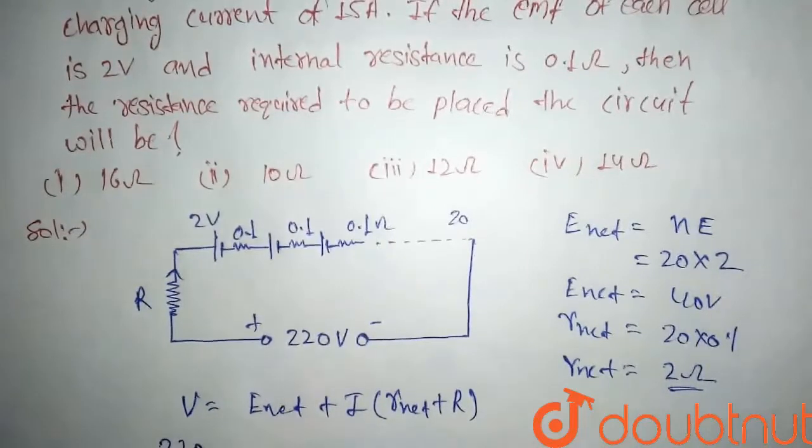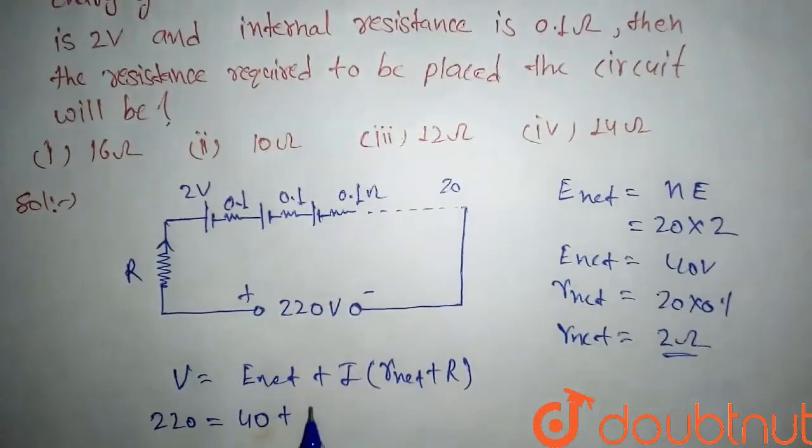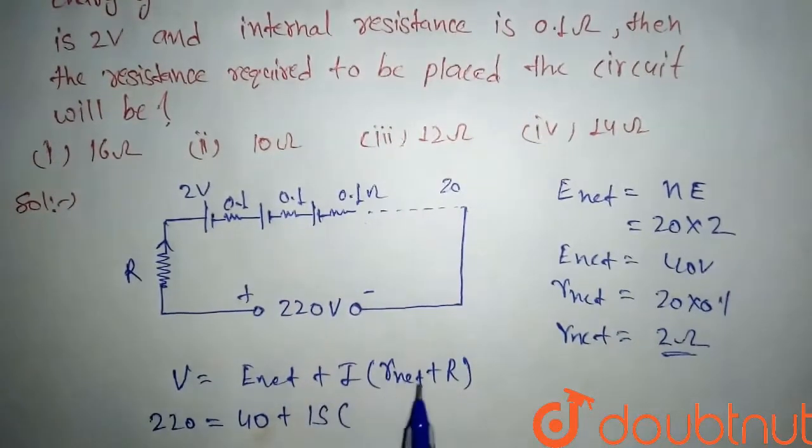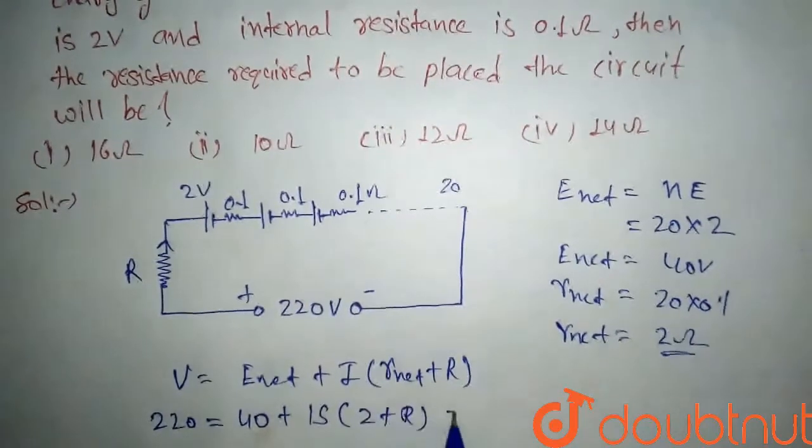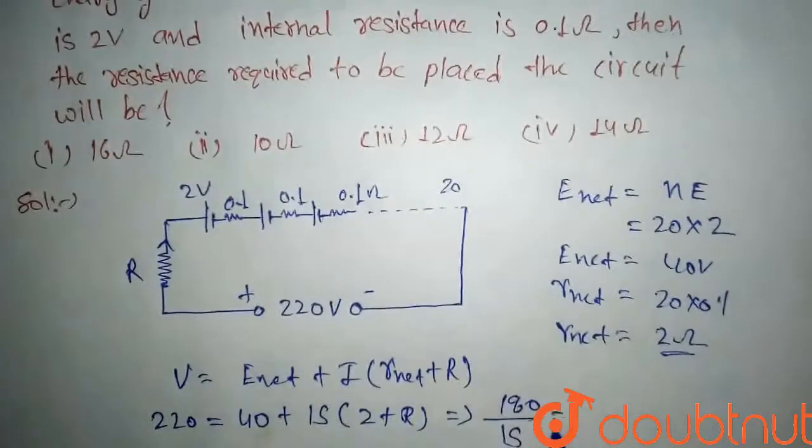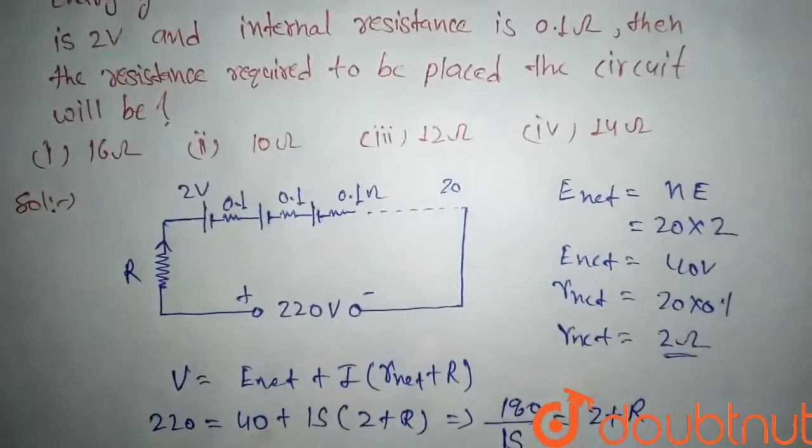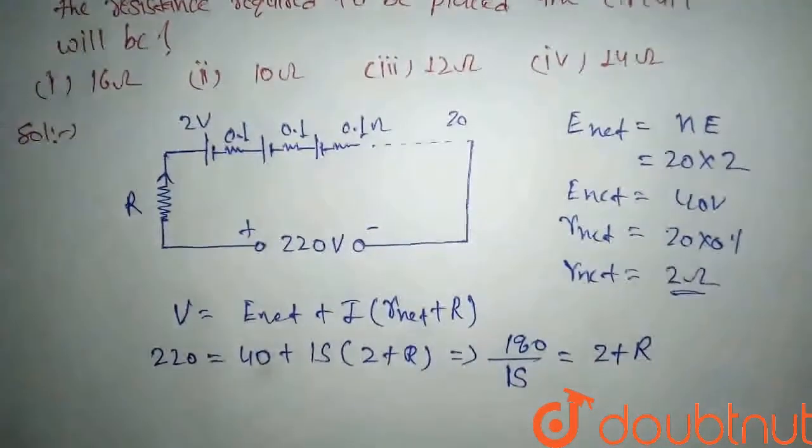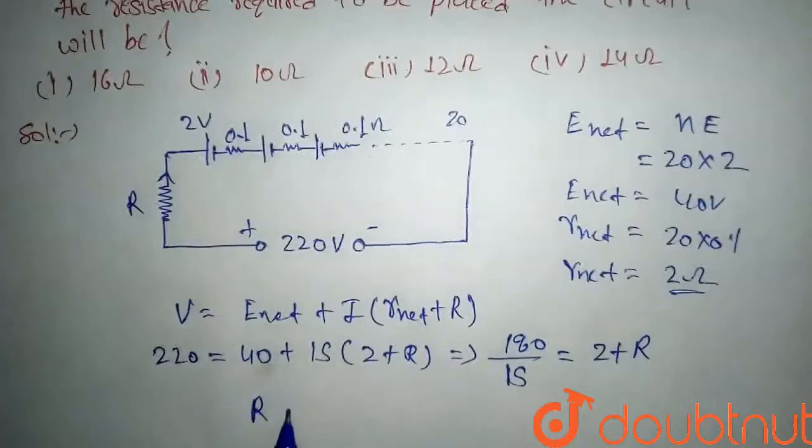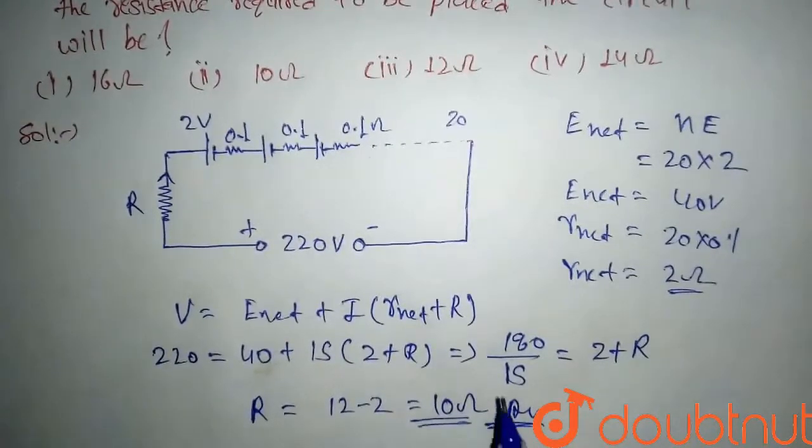So after solving, we get 180 divided by 15 equals 2 plus R. After further solving, R comes out to 12 minus 2, which equals 10 ohms. So our answer will be 10 ohms, and our option will be the second option.